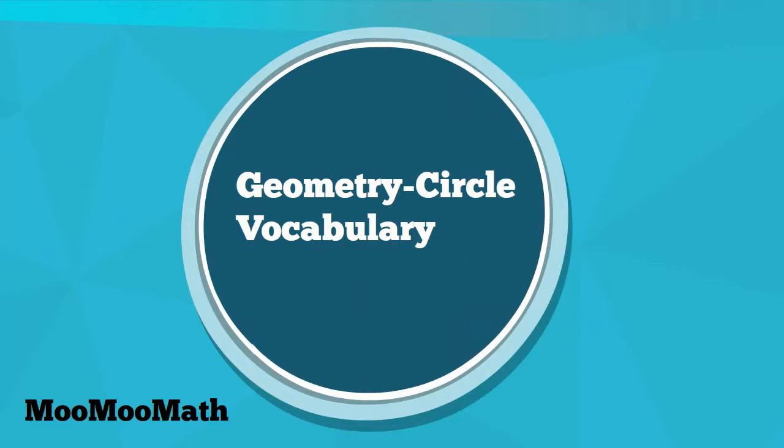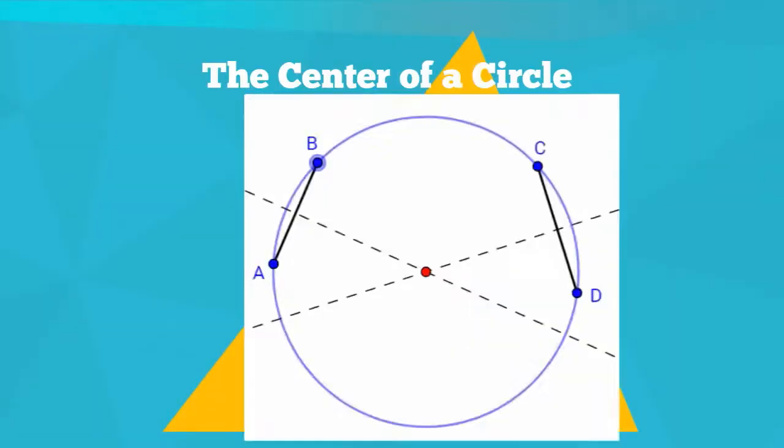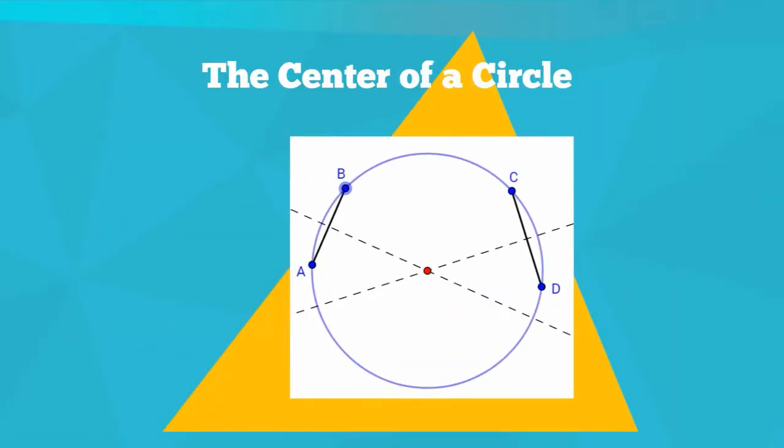Let's begin with the center of the circle. It's the point of a circle in which all points of the circle are an equal distance away.